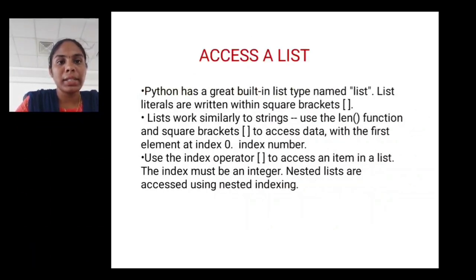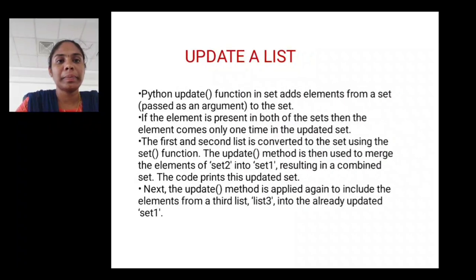Access a list. Python has a great built-in type named list. List literals are written within square brackets. Lists work similarly to strings. Use the length function and square brackets to access data with the first element at index 0. Use the index operator to access an item in a list. The index must be an integer. Nested lists can be accessed using nested indexing.